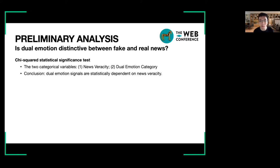Firstly, we did a task-guided statistical significance test. We constructed two categorical variables, news veracity and dual emotion category. We conducted the test on three datasets, and the results of the test show that dual emotion signals are statistically dependent on news veracity.